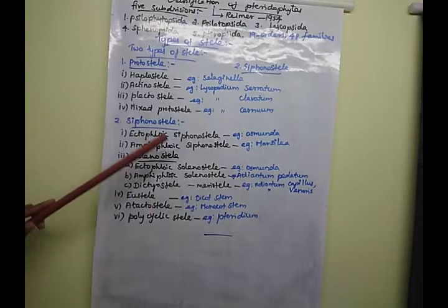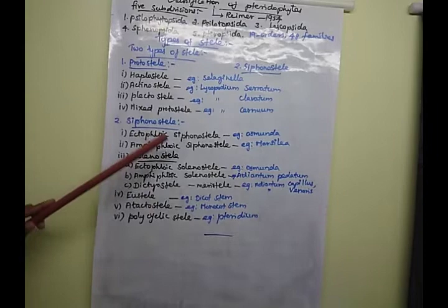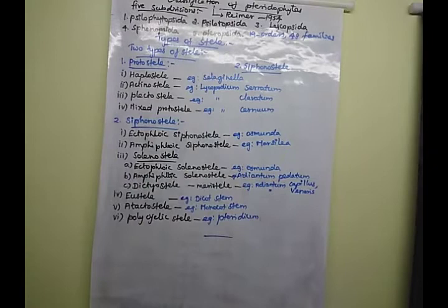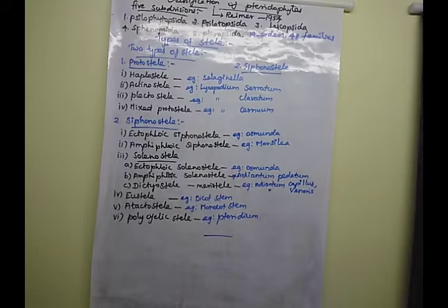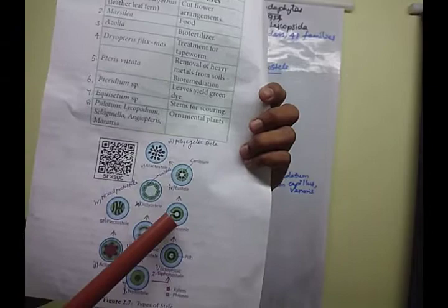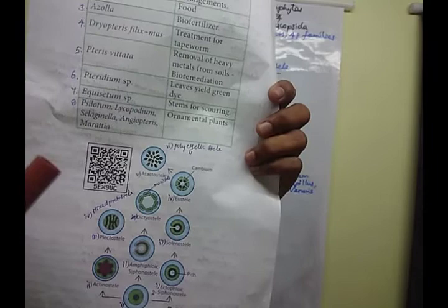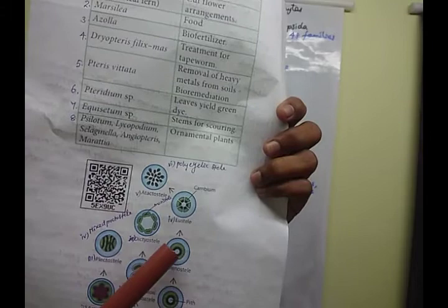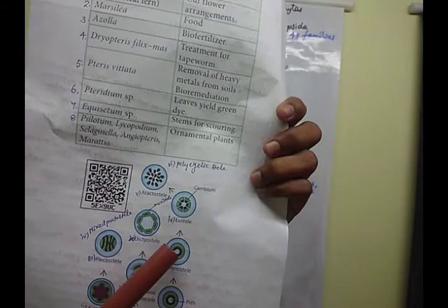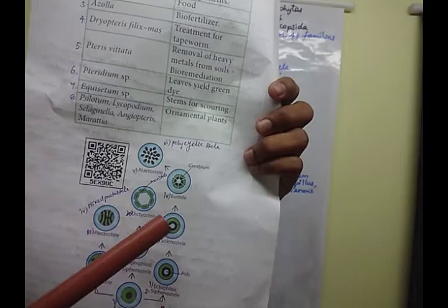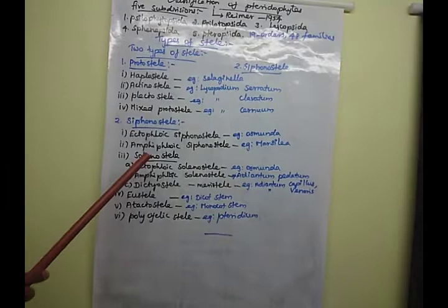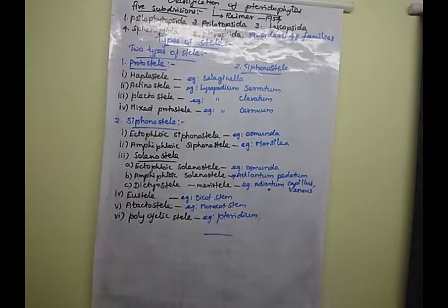Amphiphloic siphonostele means the central region has pith present, xylem is there, and phloem elements are present on both sides of the xylem. That is known as amphiphloic siphonostele. The example is Marsilea.